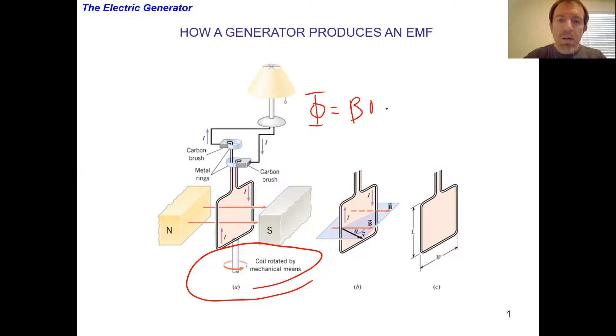My flux through that area is changing. The flux through the area of my coil—the magnetic field might be constant, the area of the coil might be constant and fixed, but the angle there is going to be changing. So as a result, my flux is changing.